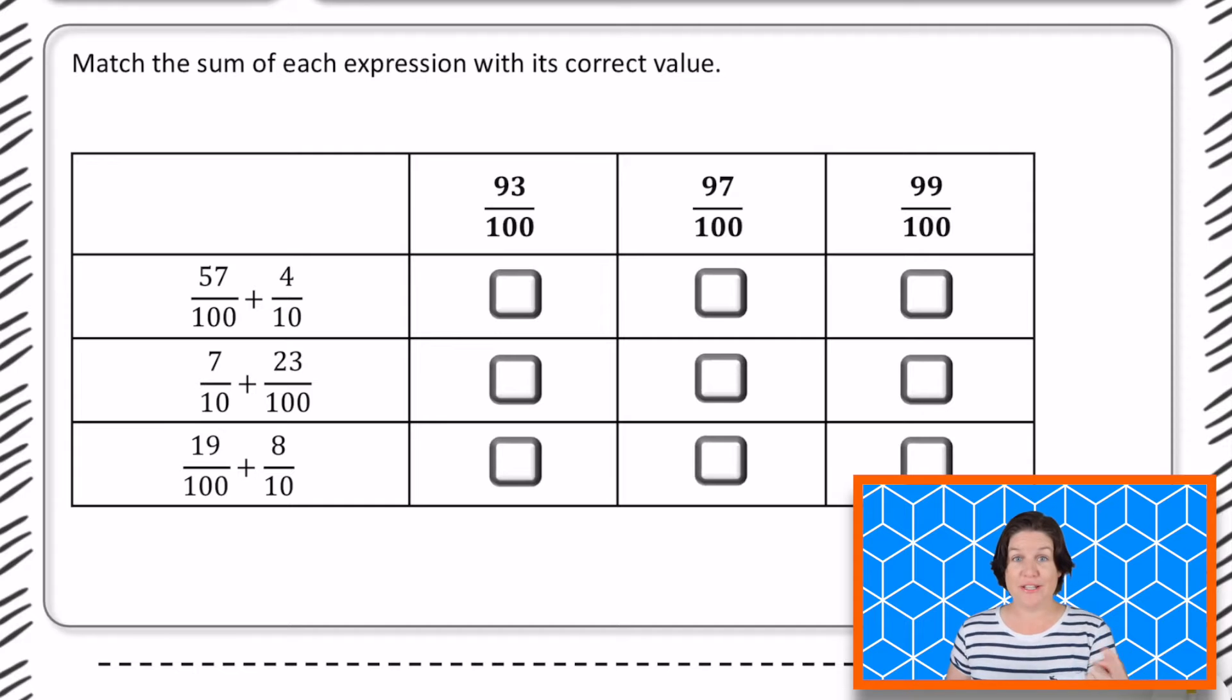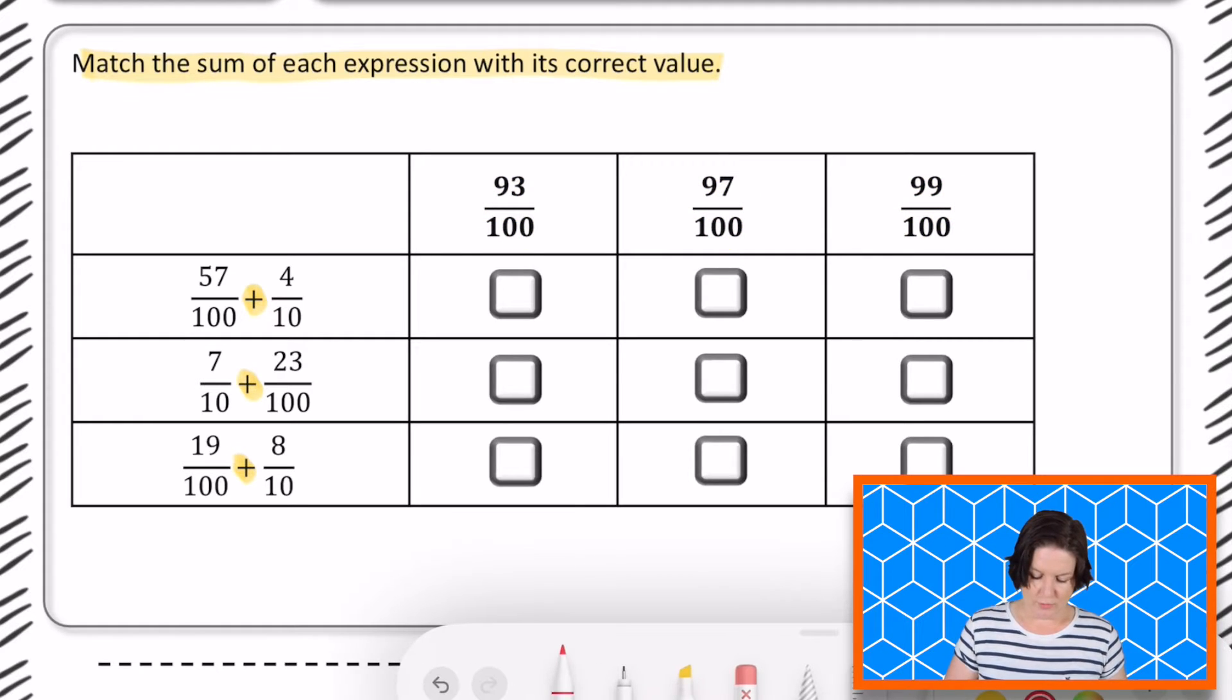Welcome back fourth grade. So let's go ahead and check the work for this one. It says to match the sum of each expression with its correct value. Now finding the sum means that we're adding and I can see that we are indeed adding fractions or our expressions right down there. And I see that my sums will be located over here. So it's a matching item question and it's time to work it out.